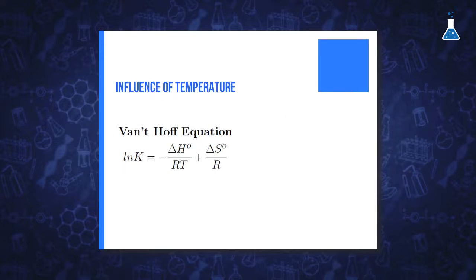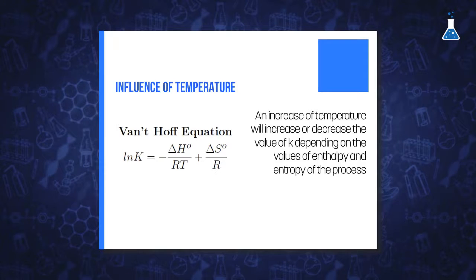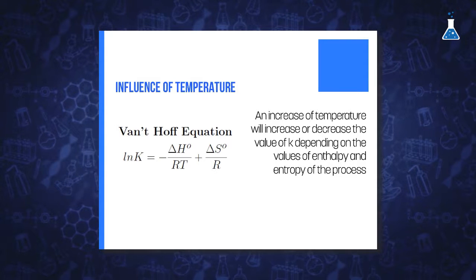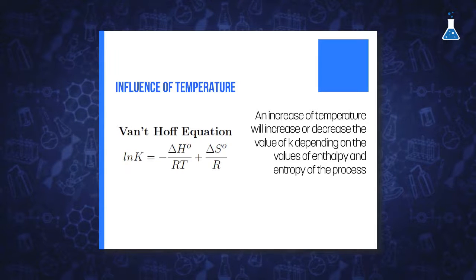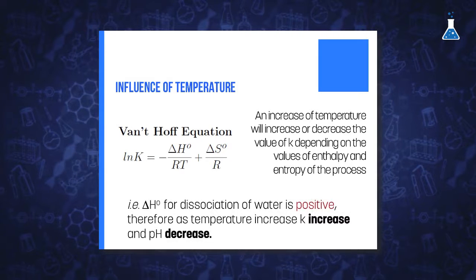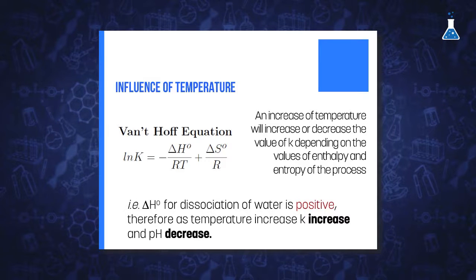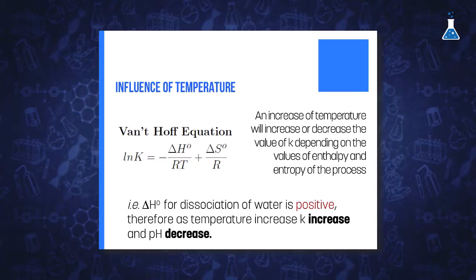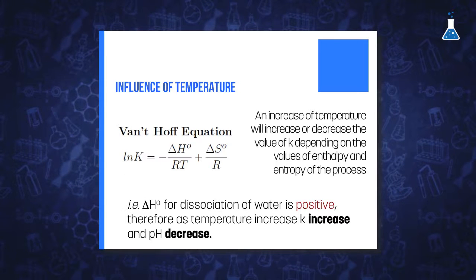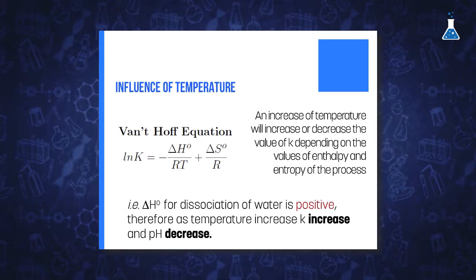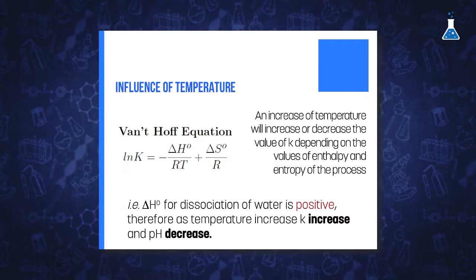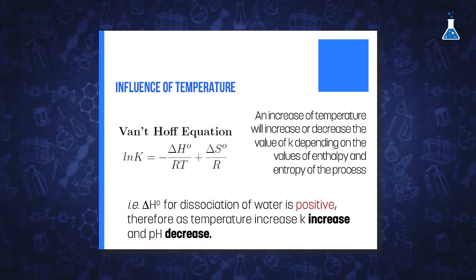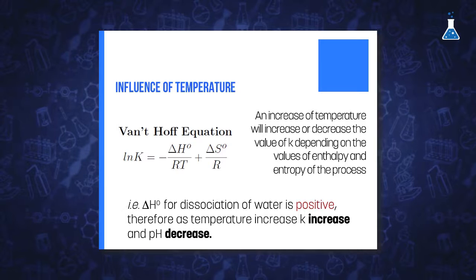The dependence of acid and base strength on temperature is more evident, since all equilibrium constants vary with temperature according to the van't Hoff equation. An increase in temperature will lead to an increase or decrease in the value of the constant depending on the enthalpy and entropy of the process. For example, if we examine the dissociation of water and consider that the variation of enthalpy and entropy are independent of temperature as a good approximation, we observe that the value of the constant increases with increasing temperature. In other words, the pH of pure water decreases with temperature.